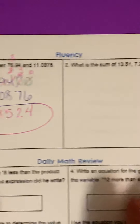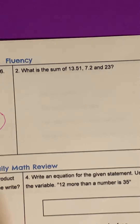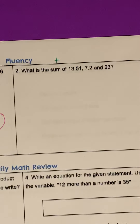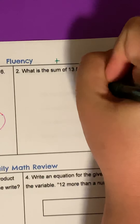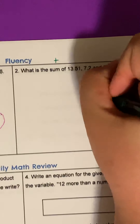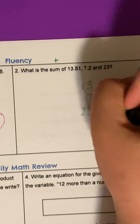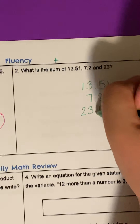We're going to move on to number two. Number two says: what is the sum — we know sum means add — of 13 and 51 hundredths, seven and two tenths, and 23? Remember when we're adding we need to line up our decimals. So I'm going to put 13.51, 7.2 — line up that decimal — and 23, which is a whole number. We can put placeholder zeros.